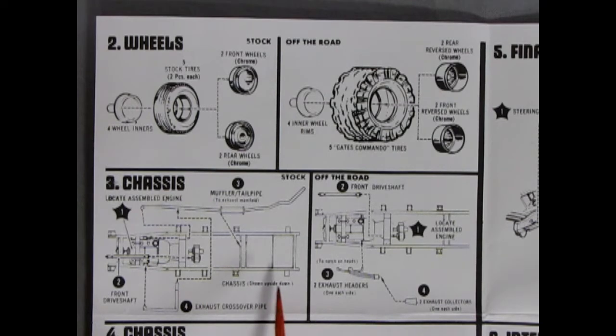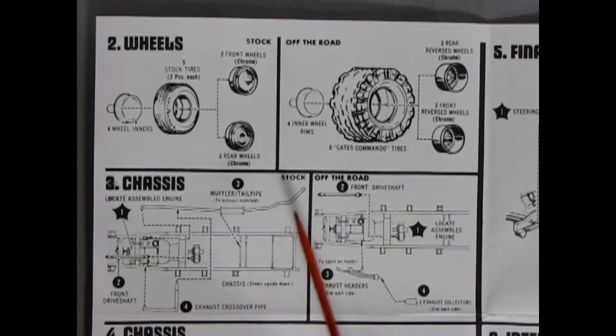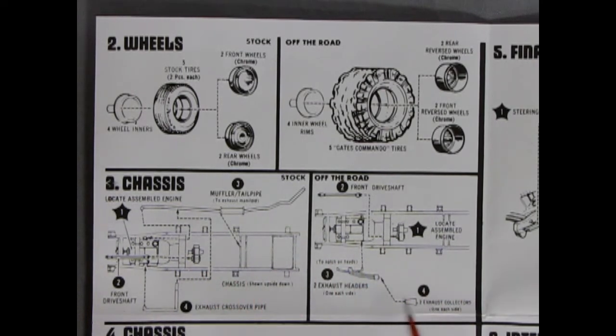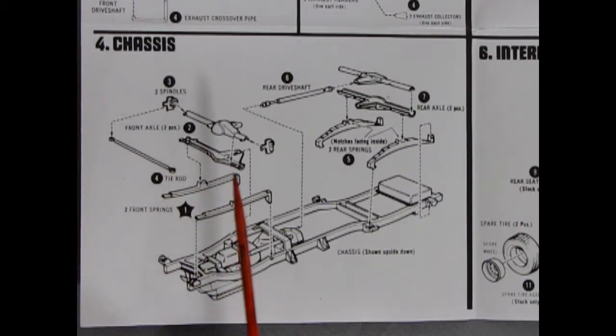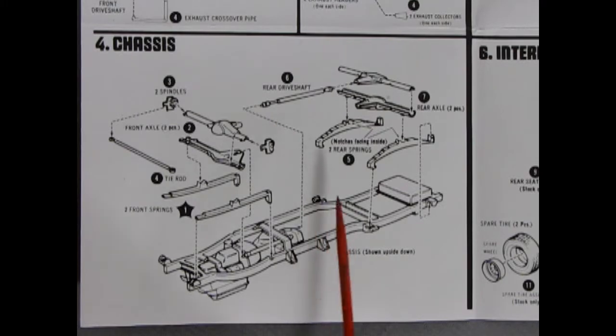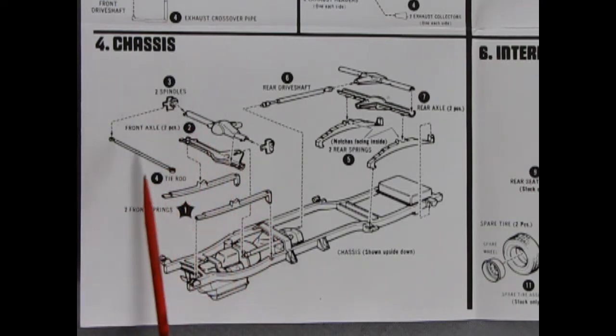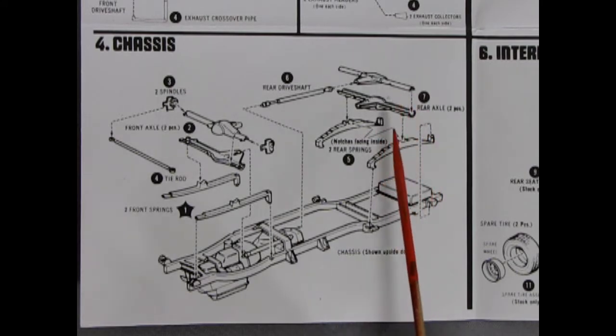Now our chassis, we've got our frame, and then it shows a muffler and tailpipe, exhaust crossover pipes. All this would be hooking up into your engine. There's front drive shafts here going off from our transfer case, and then exhaust headers as well. This is locate assembled engine here. Here we are with our chassis in Illustration 4, which is a little easier to follow than Illustration 3. So this is universal to both. So we have our front springs going on here, and then two-piece differential with the spindles for steering, and a tie rod up front. Now unfortunately these don't actually steer, but it does give the correct look. There's our rear drive shaft going to the two-piece rear differential with the springs there. It says the notches will go up underneath.